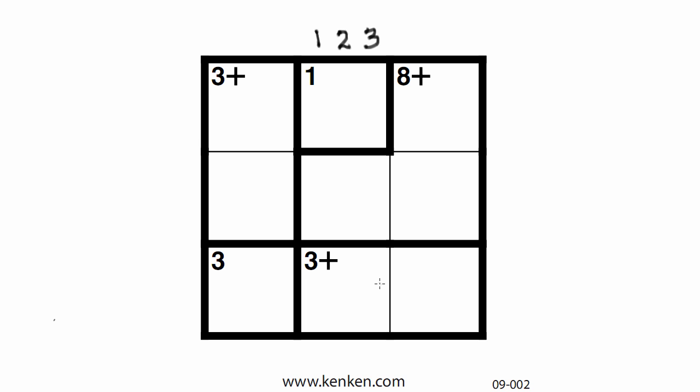The third rule is where it gets exciting in the math classroom. For instance, up in this particular area here, you'll notice there's a 3 and a plus. What that means is, these two squares right here are called a cage. They're surrounded by a large, black, thick line. Those two numbers have to add up to 3.